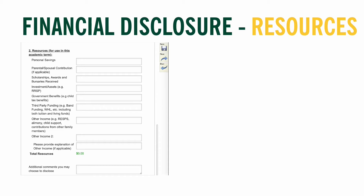For scholarships, awards, and bursary sections, if you've already received some funds, include them here. For example, if you've received an automatic entrance award, the entire amount can be included as it will be applied to your student account in the fall. But for these SAMS awards, since you don't yet know if you'll receive any, do not include anticipated award funds. The same goes for band funding and student loans — you haven't applied yet, so leave those sections blank. Only include funds you know for sure you will have.